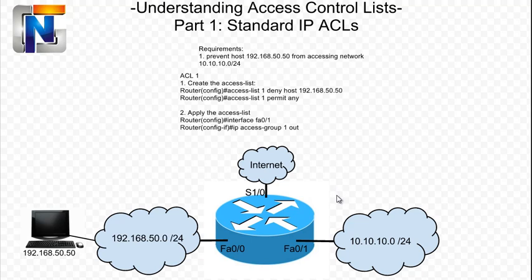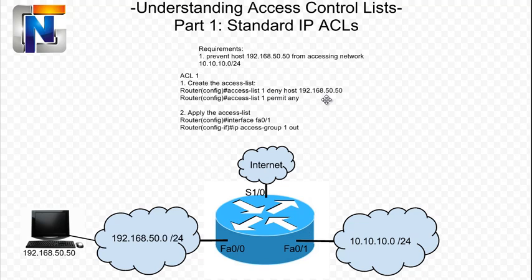When we apply it, we're applying it to FastEthernet0.1. We need to access that interface, get into interface configuration mode, and type ip access-group 1 out. So any time this host, 192.168.50.50, tries to send traffic to 10.10.10.0, it's going to hit this interface, FastEthernet0.1. And it will try to go out of that interface to get to this network. Once it tries to go out, it will be run against AccessList1, and it will be denied based on that rule, deny host 192.168.50.50. If another host, such as 192.168.50.52, comes in and wants to talk to this network, it will be allowed because of the permit any statement.